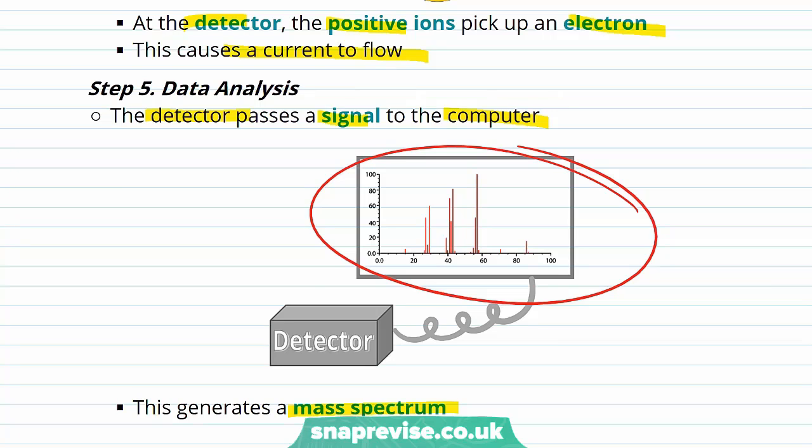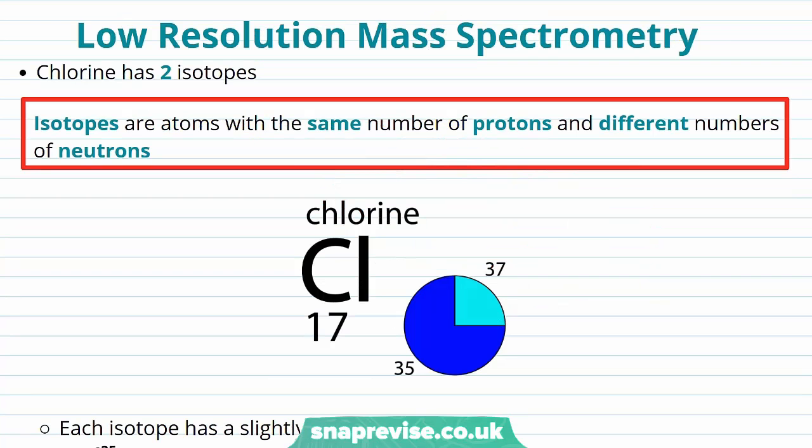Specifically time of flight mass spectrometry, let's take a look at some of the data that's produced and what we can gather from it. We're going to take a look at low resolution mass spectrometry to begin with. You may know that chlorine has two isotopes, where isotopes are atoms with the same number of protons and different numbers of neutrons.